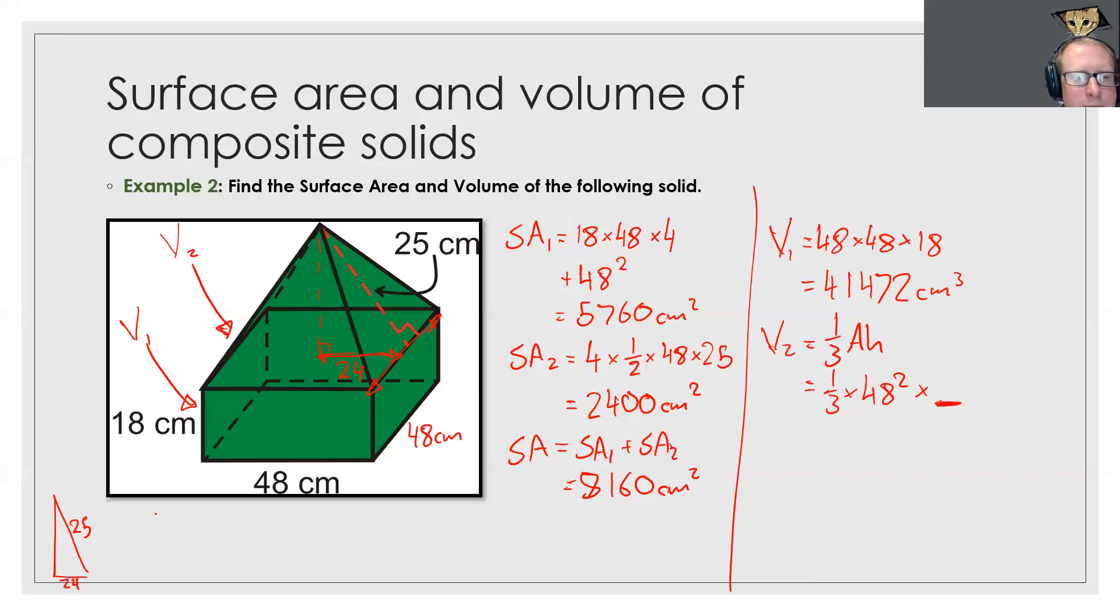So we have 25 squared minus 24, since we're finding a shorter side we'll call this x equals x squared. So x is the square root of all of this. We can quickly put that in our calculator and we get our answer to be 7. So that is my height.